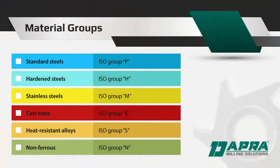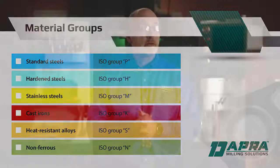ISO group P is for non-heat treated steel. ISO group H represents hardened steel. Stainless steel falls under ISO group M. Cast iron is categorized under ISO group K. Heat resistant alloys or exotics fall under ISO group S. And non-ferrous materials like aluminum, plastics, composites, and wood are ISO group N.